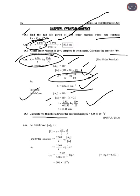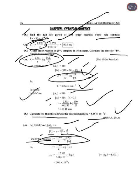Next: Calculate the two-thirds life for a first-order reaction with k = 5.4 × 10⁻⁴ s⁻¹. When two-thirds of the reaction is complete, remaining concentration a = a₀ − (2/3)a₀ = a₀/3. Using t = 2.303/k × log(a₀/a), substituting values gives t = 2.01 × 10³ seconds.